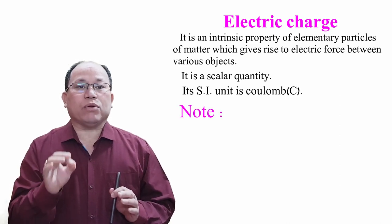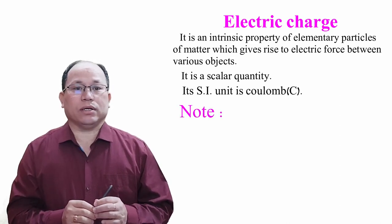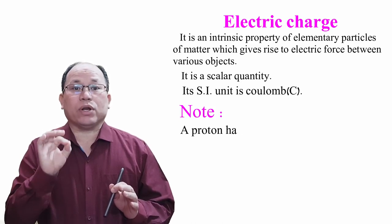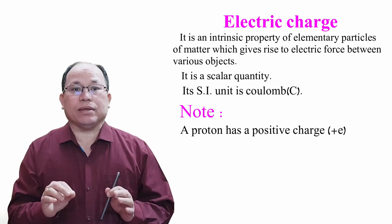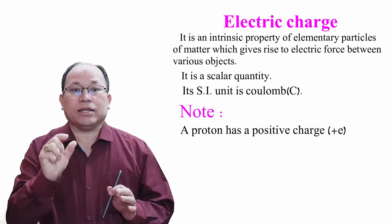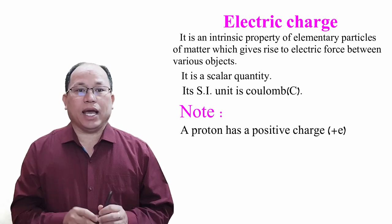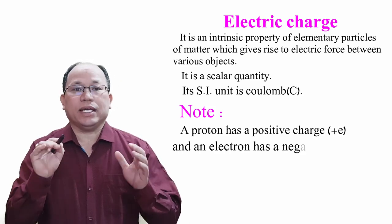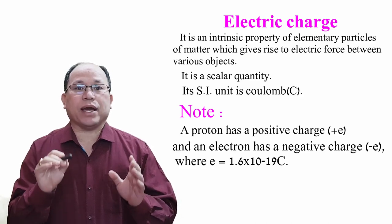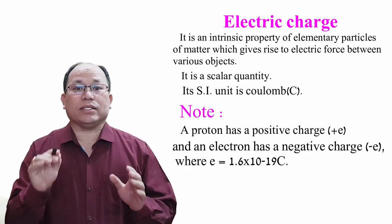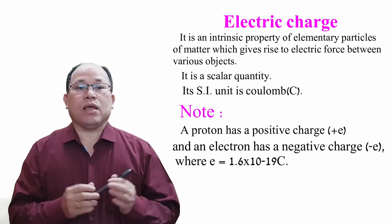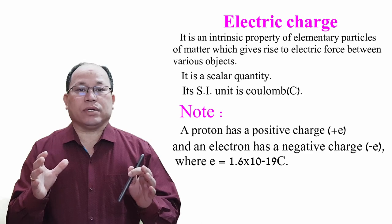You have to note down this point. Note: A proton has positive charge +e, and an electron has negative charge -e, where e = 1.6 × 10^-19 C.